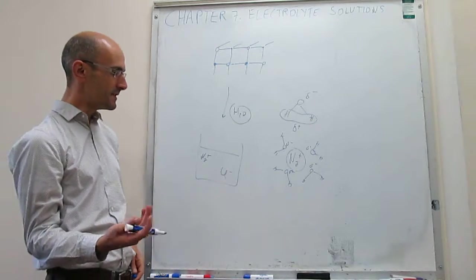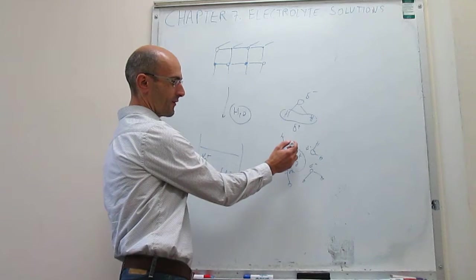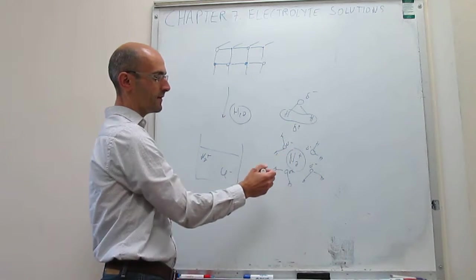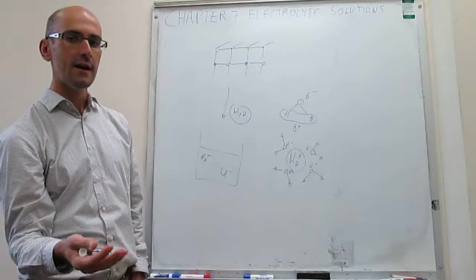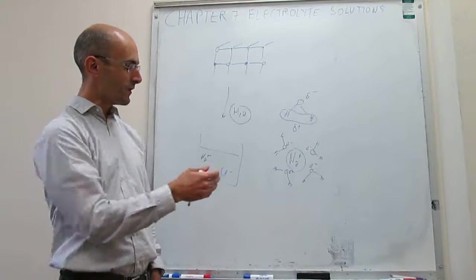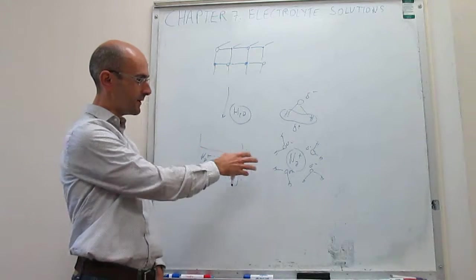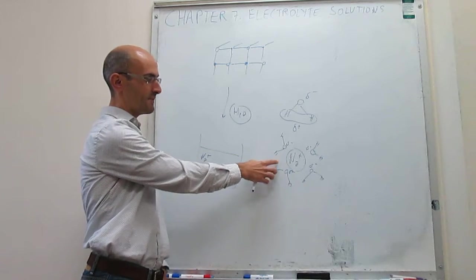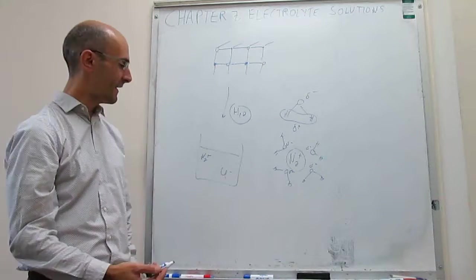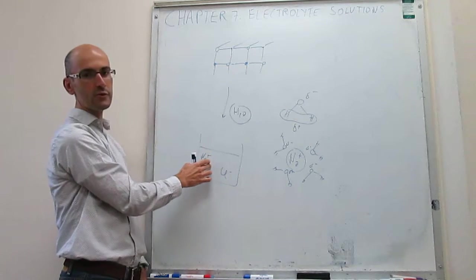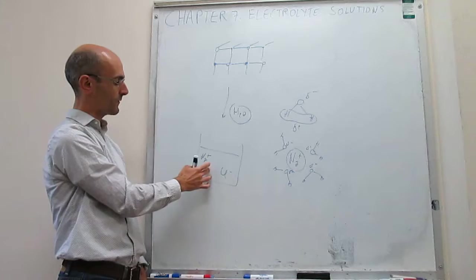So then what happens is that even though the interaction of this partial negative charge with the positive ion is not as strong as positive with negative, you have so many of them that indeed having a sodium ion in a solution like this is much more favorable than having the crystal structure in the solution.